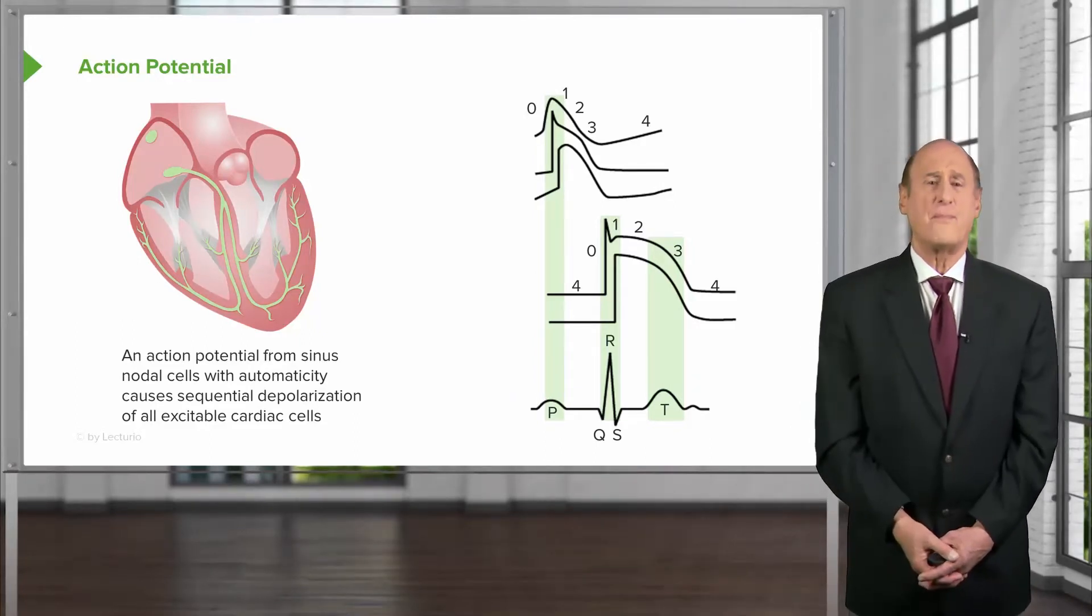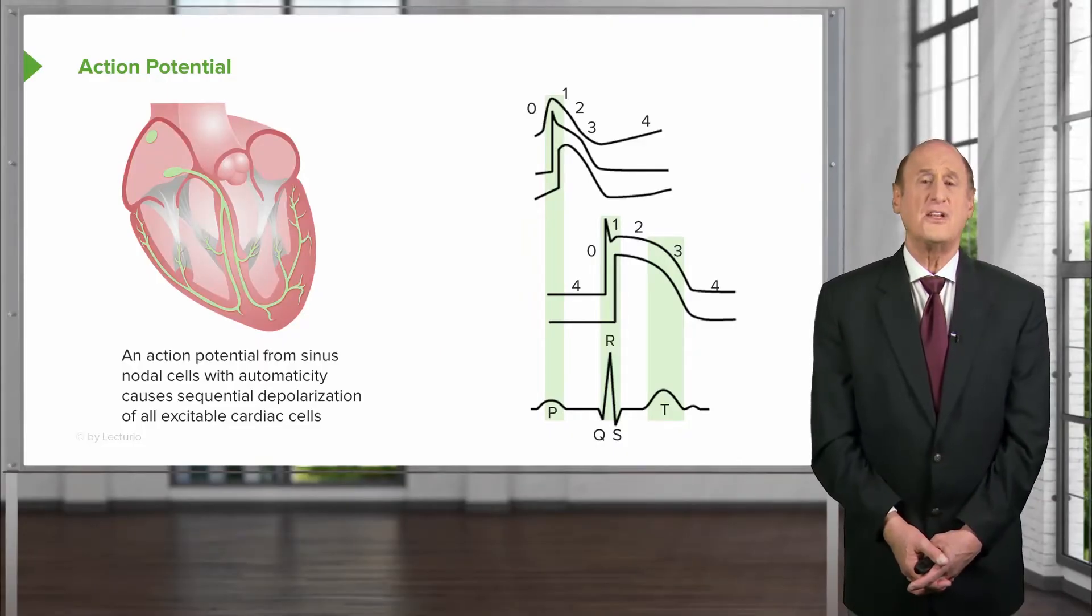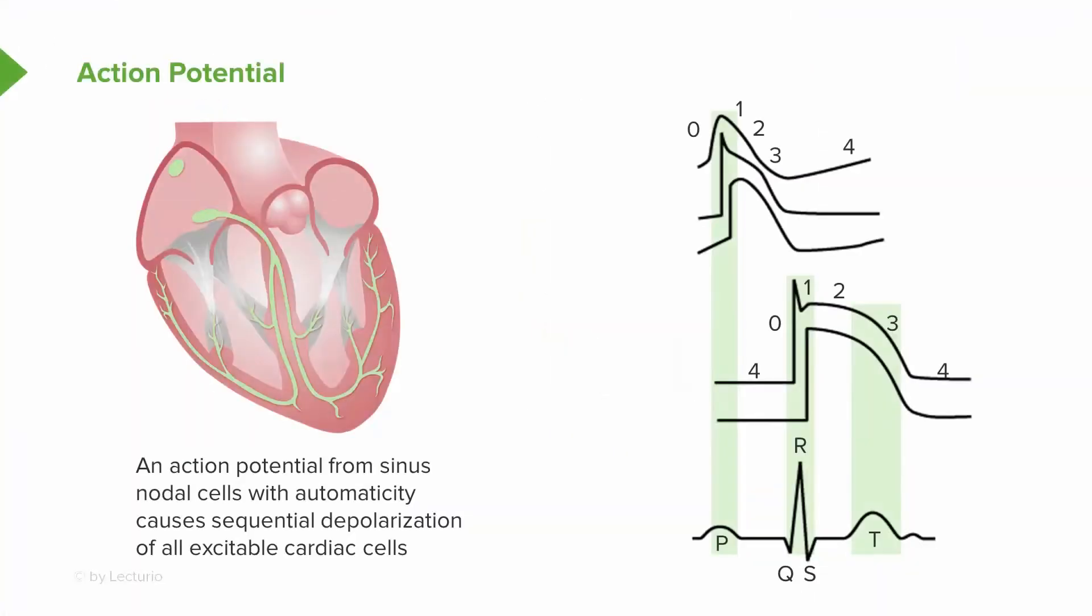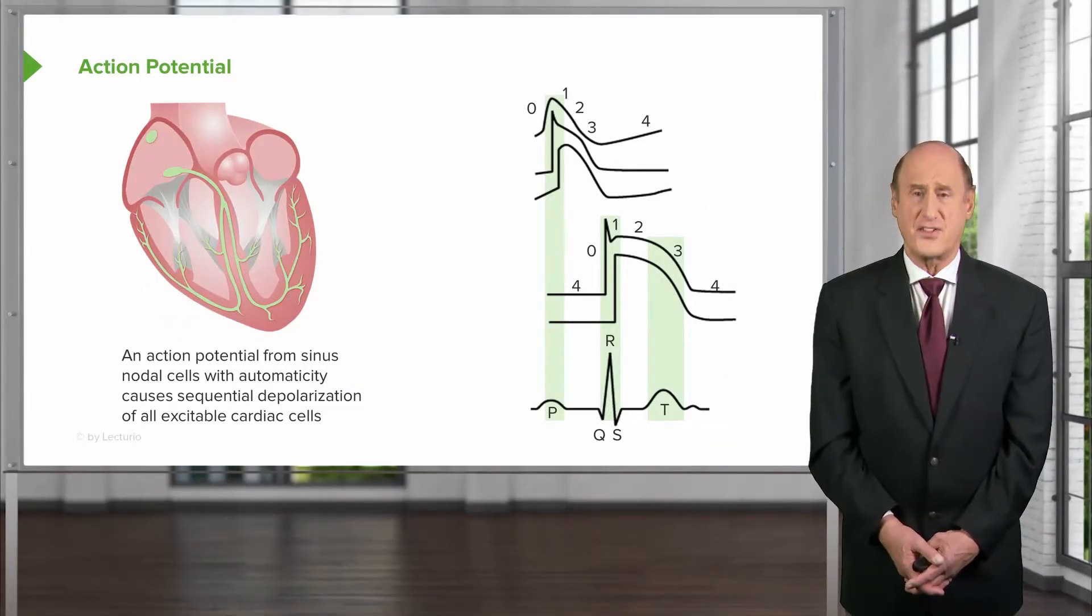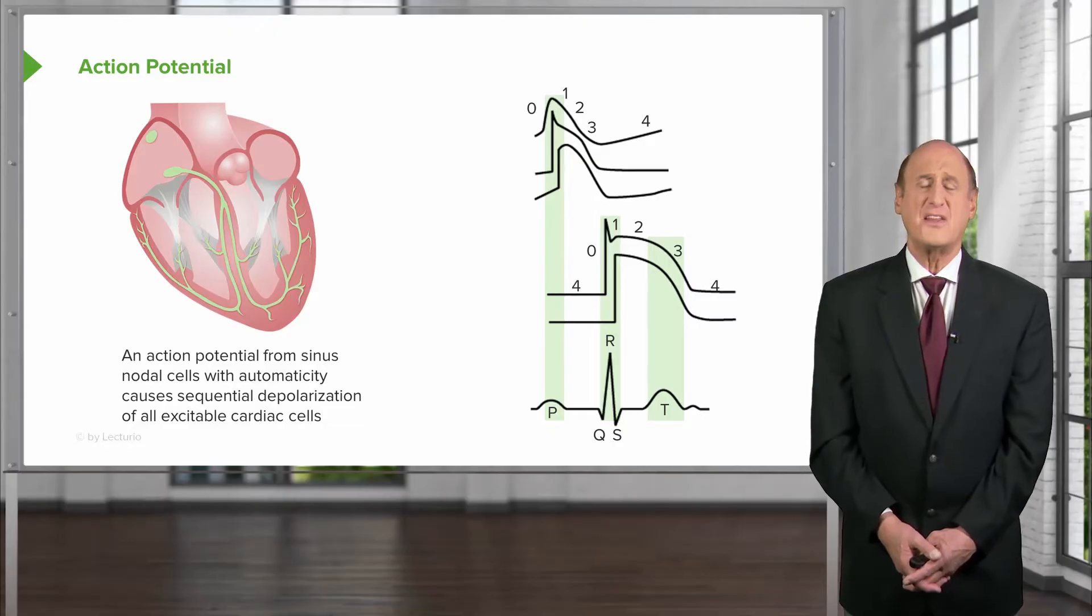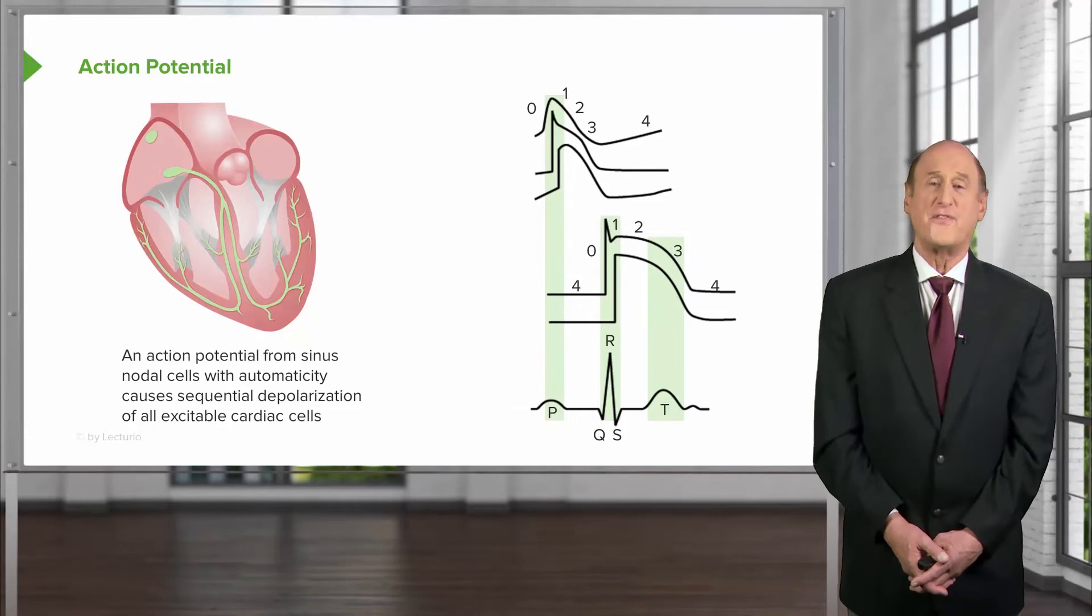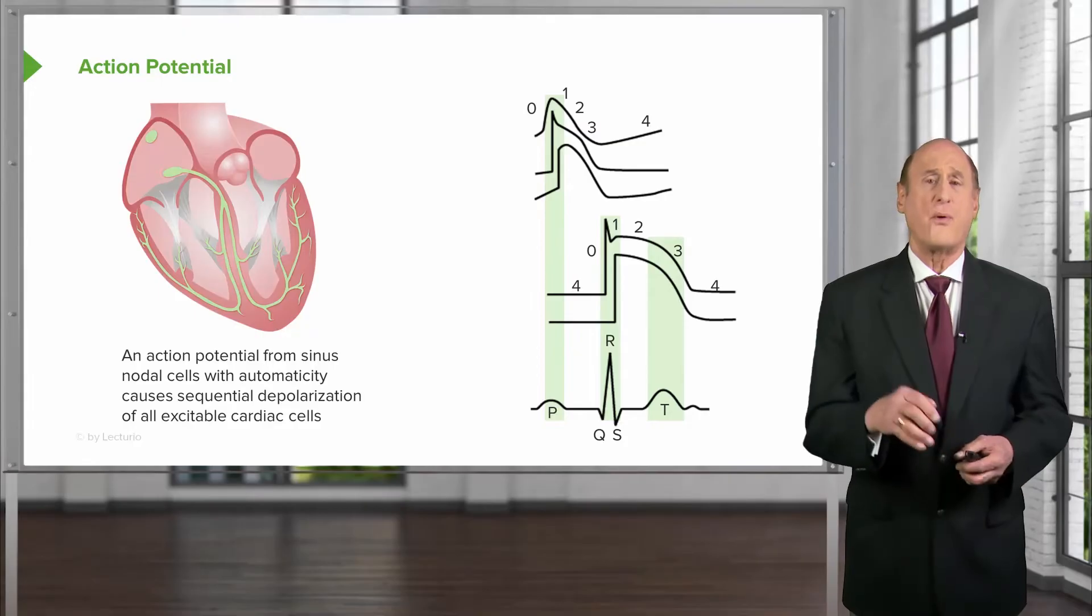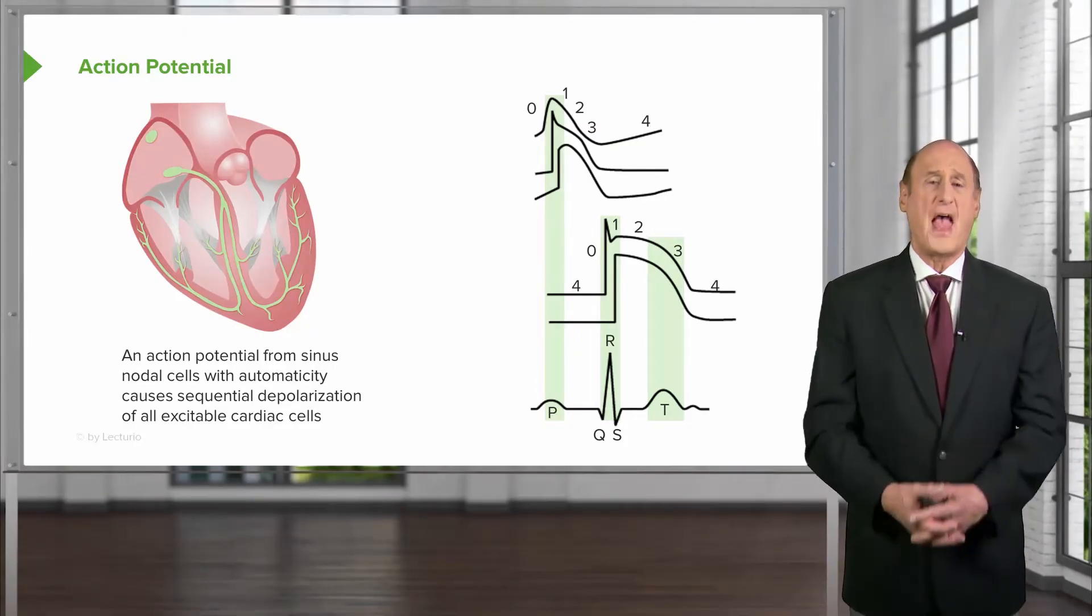So there is a pacemaker which spontaneously depolarizes high in the right atrium. That's the little round green dot high in the right atrium in the diagram on the left here. And that area has very specialized myocardial cells. They depolarize spontaneously. Sodium spontaneously leaks into the cell through some channels that are called the funny channels because no other sodium channel leaks like this. And when they get to a certain point, it triggers the action potential.